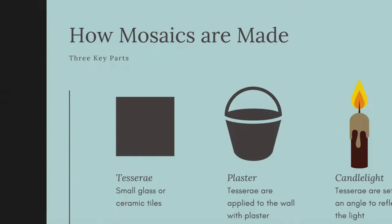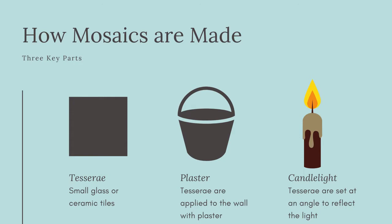Before we discuss the works themselves, it is important to understand what mosaics are and a history of their use. Mosaics are pieces of art constructed of small glass or ceramic tiles called tesserae. In order to make them in different colors, gold or other pigmented plates would be pressed between the glass. Once the design was completed, the tesserae would be affixed to the walls with plaster.